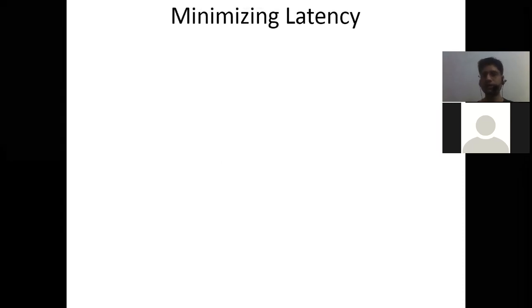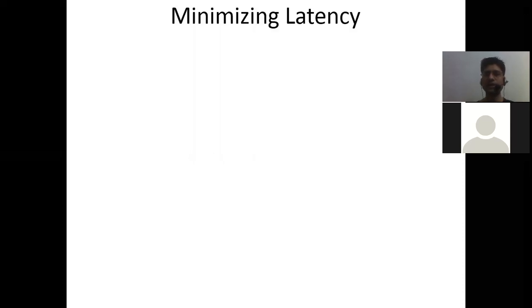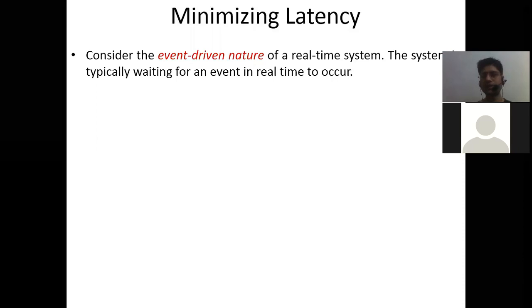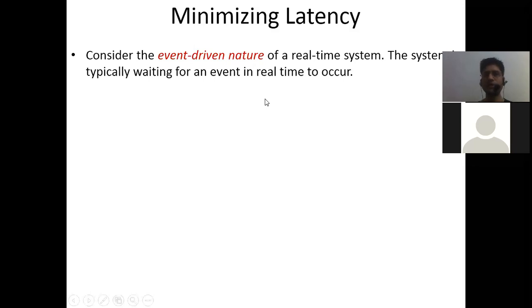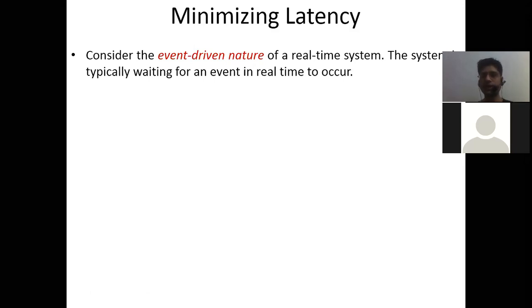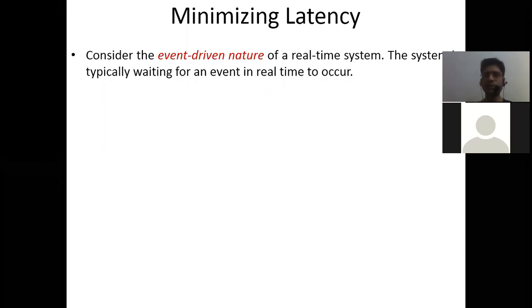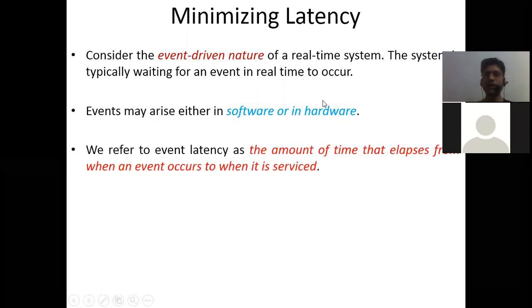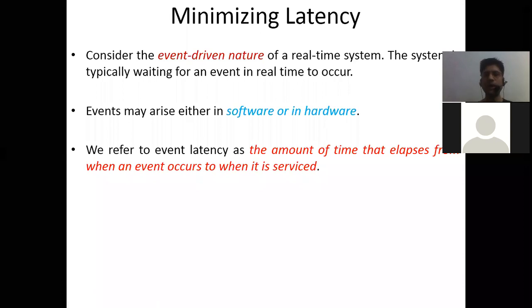Whenever we talk about real-time systems performing tasks within a given time frame, there is a concept of latency which we must minimize. Latency is the time from when a particular task arrives to when you are first able to give a response to solve that task. Consider the event-driven nature of a real-time system — the system is typically waiting for an event to occur, and events may arise either in software or in hardware.